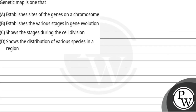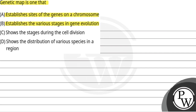Hello, let's see this question. The question says: genetic map is one that — establishes sites of genes on chromosome, establishes the various stages of gene evolution, shows the stages during cell division, or shows the distribution of various species in a region.